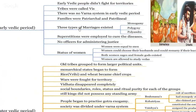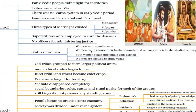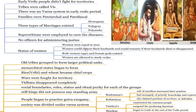Three types of marriages existed during the Early Vedic period: monogamy (one man, one woman), polygyny (one man marries multiple women), and polyandry (one woman marries multiple men). There were also superstitious beliefs — that mantras and superstitions could cure diseases. There was no officer for administrative justice; it was a loose society where everyone was equally treated with leniency.